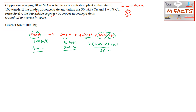The grade or assay refers to the content of the marketable commodity in any stream — whether feed, concentrate, or tailings. For example, if someone says a material is of 60 grade, it means it consists of 60 percent of that particular component.